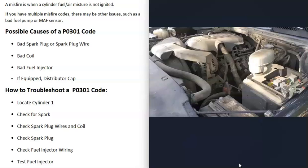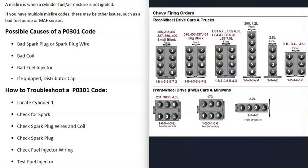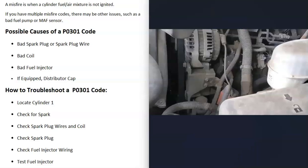There are several ways to troubleshoot a P0301 on a Chevrolet or GMC. The first thing to do is locate the number one cylinder on your particular engine. Just Google your engine and 'firing order,' look at Google Images, and it'll usually pop right up.